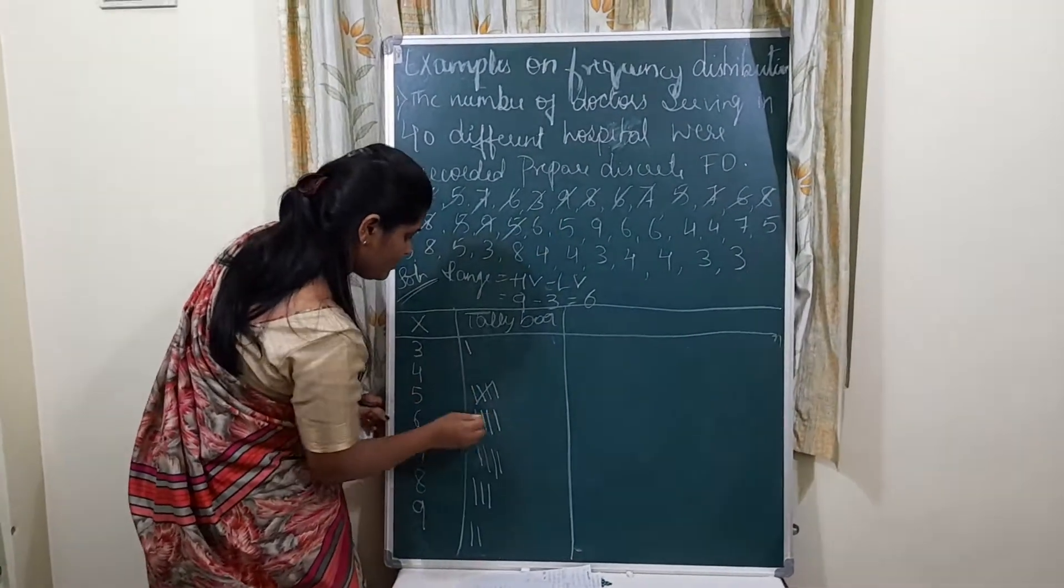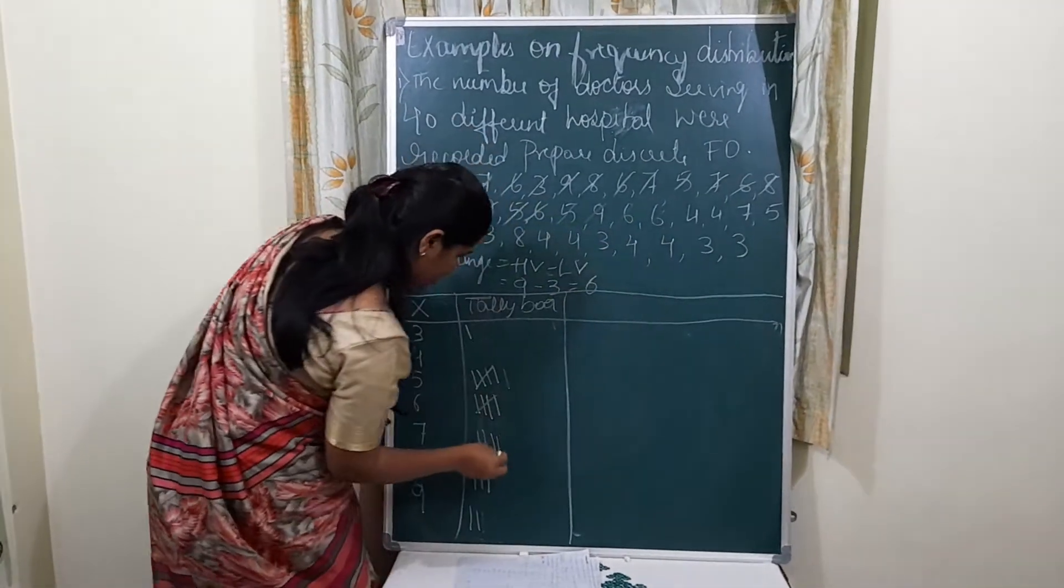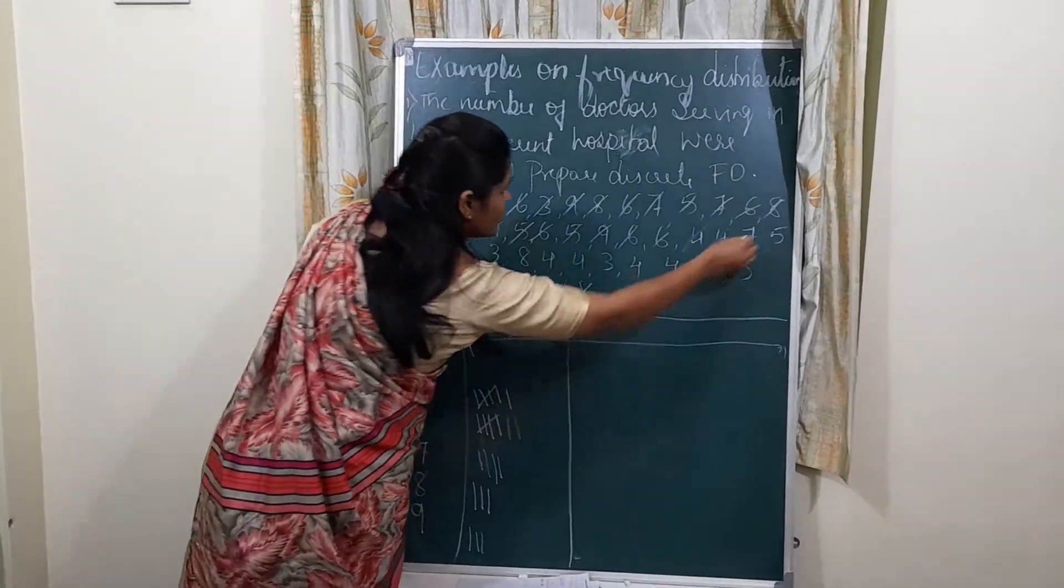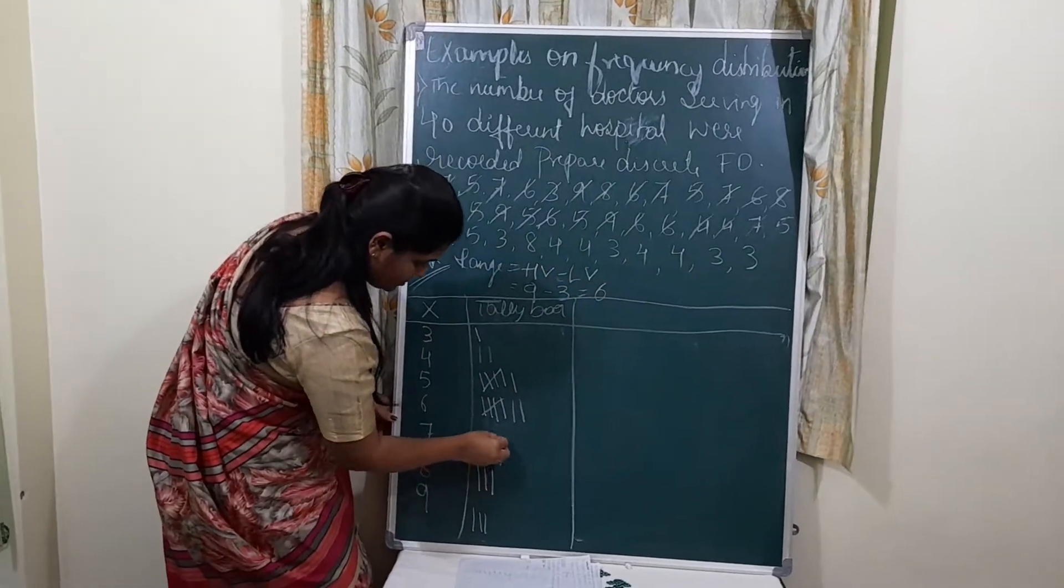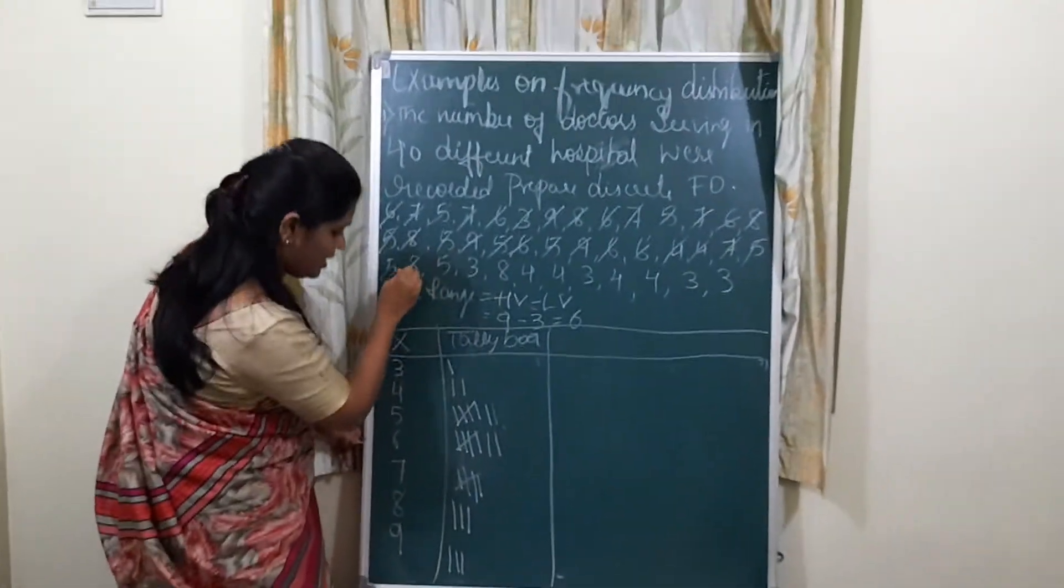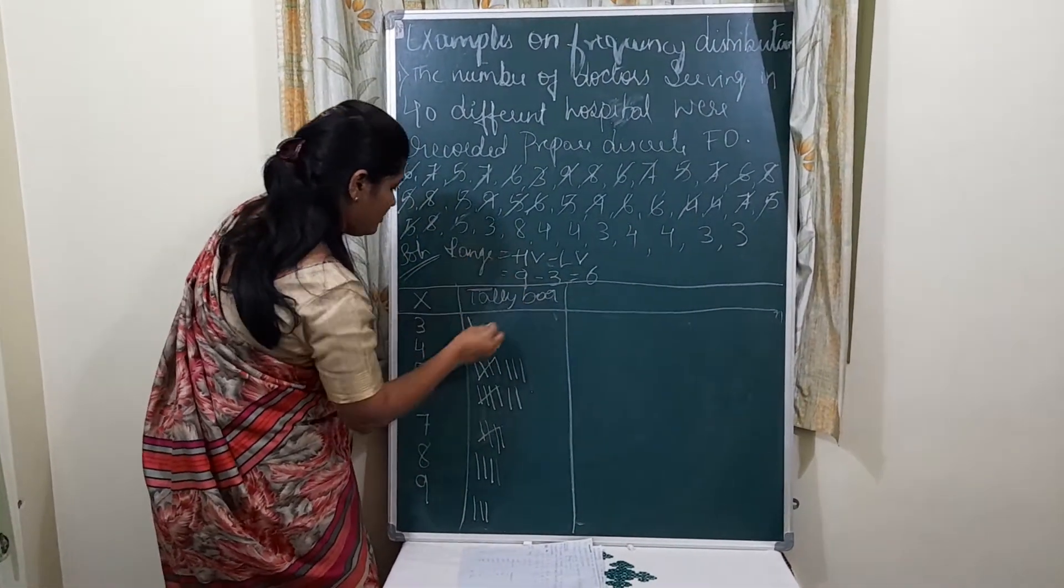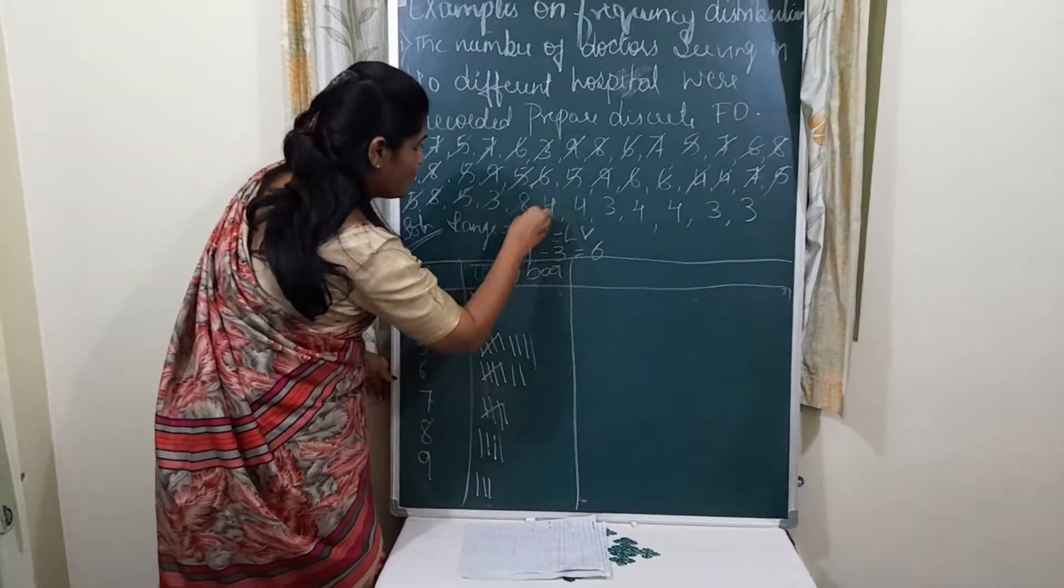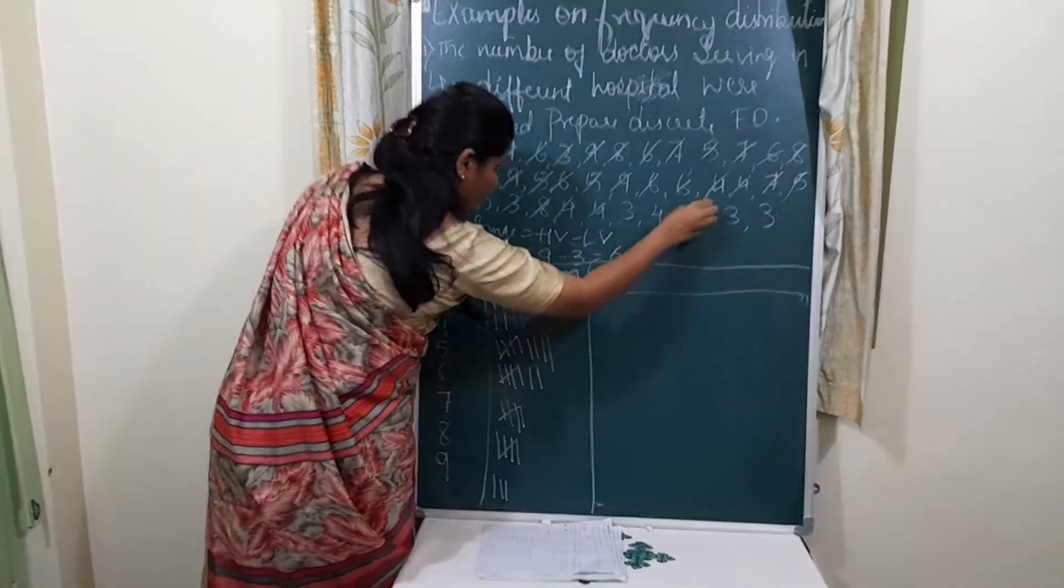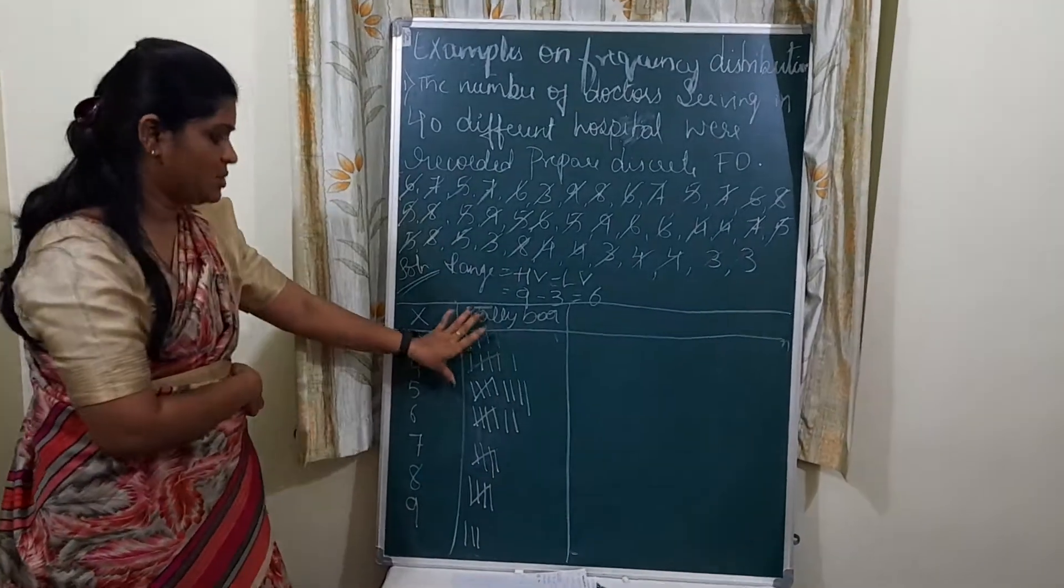Next observations: 6, 5, 9, 6, 6, double 4, 7, 5, 7, 5, 8, 5, 3, 8, 4, 3, 4, and 4, 3. Okay, this is what tally bar.